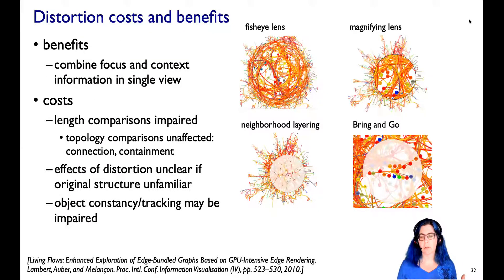There's also been a lot of work in trying to run empirical studies to understand, can people understand this and what are the pros and cons of this geometric distortion approach to embedding focus and context information together in a single view?